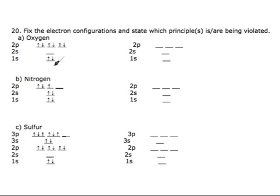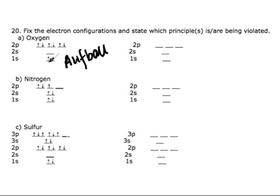Let's start by seeing how the orbitals are being filled. The 1s orbital, which is the lowest energy orbital, is completely filled. The second lowest energy orbital, 2s, is not filled at all, while the 2p orbitals are being filled. So this violates the Aufbau principle, which states that you must fill the orbitals from lowest energy to highest energy. You cannot fill the 2p orbitals, which are higher in energy, before you fill the 2s orbitals.